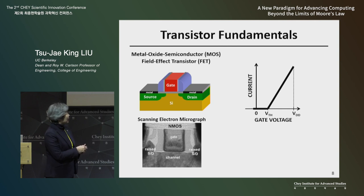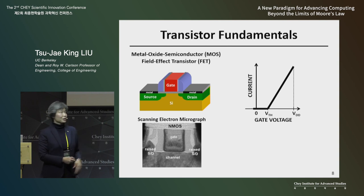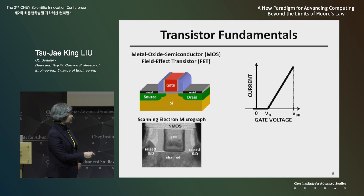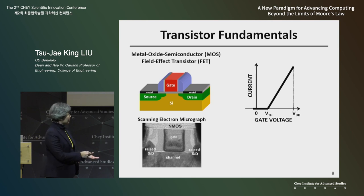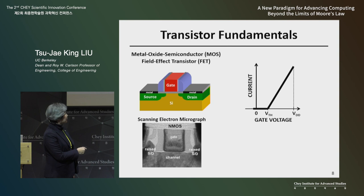If you increase the gate voltage above some minimum threshold voltage, the current can flow between the source and drain electrodes — this is a field effect transistor. This is a cross-sectional micrograph of a MOSFET, and this minimum feature size, the gate length, today is approaching 10 nanometers. In this example, it's about 30 nanometers.